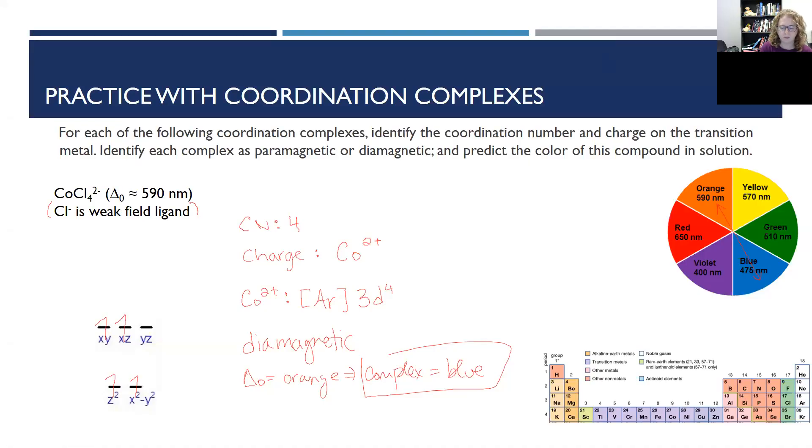All right, this time the coordination number is four because there's only four ligands, and since all those chlorines are minus one, the cobalt has to be plus two to make the charge. The electron configuration ends up being argon 3D7, and this is where weak field versus strong field matters because weak field means high spin. It means fill all the orbitals and then go back in pair, so I go one, two, three, four. If this had been a strong field ligand, I would have filled the bottom and then the top, but they fill equally now. Because of that, this complex is paramagnetic. It's got a bunch of unpaired electrons, and that wavelength of 590 nanometers is orange, so the complex is blue.